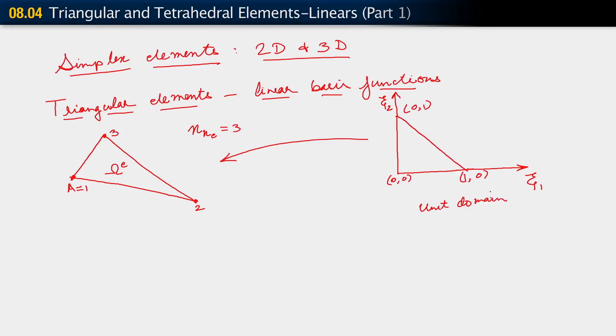Now, all we really need to do is define the basis functions. Once we've defined the basis functions, everything proceeds just as before. The way this is done is, it is conventional to label this node in the parent domain as node 1. This is node 2. And the origin is node 3.